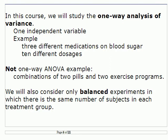For this class we're going to look at what's called one-way analysis of variance, meaning there will be only one independent variable. For example, an experiment on blood sugar looking at three different medications — the only variable is medication. Or one medication at ten different dosages — ten treatments but still one independent variable. Two independent variables, such as both medication and exercise program, would not be one-way ANOVA.